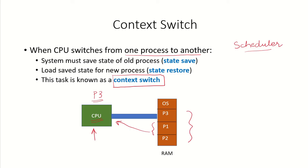So what happens during the context switch? First, the state of the old process will be saved. P3 was running currently and the state of process P3 will be saved in the process control block of P3. The process control block contains information about the contents of the registers, the number of open files, and the value in the program counter. All that information available in the PCB data structure of P3 will be saved so that it can be used later when that process is executed again.